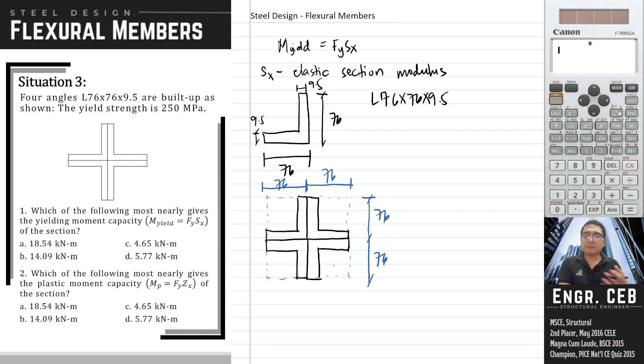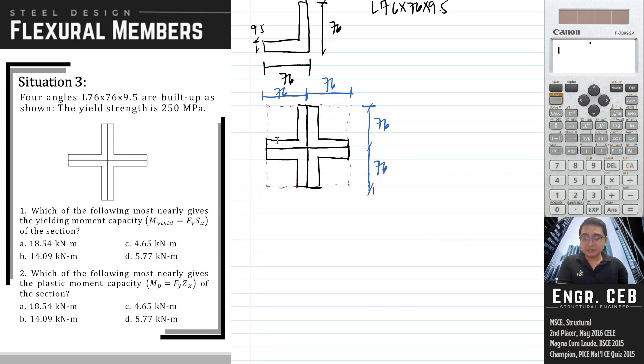Since the dimensions are symmetrical with respect to x and y axis, the moment of inertia with respect to x and y axis are equal. We need only to compute for one moment of inertia. Let's say we compute for the moment of inertia with respect to x. Let's say this is the x-axis.